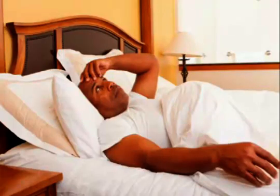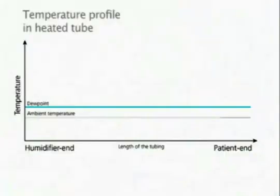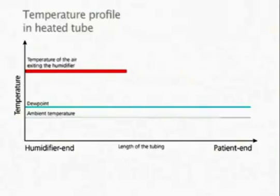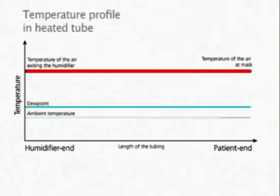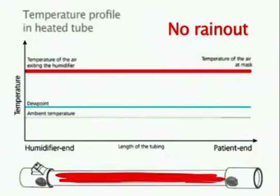Hibernite can solve these problems. As the wall of the Hibernite heated breathing tube is gently heated along its entire length, the humidified air is kept at a temperature above the point at which condensation begins. No condensation means no rain-out, and no rain-out means better sleep.